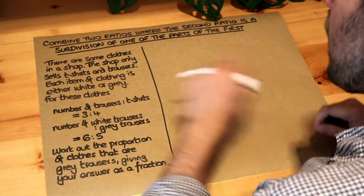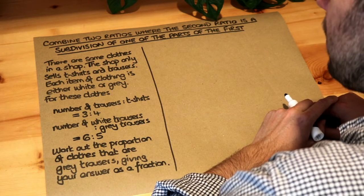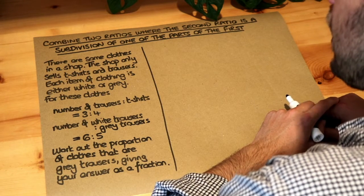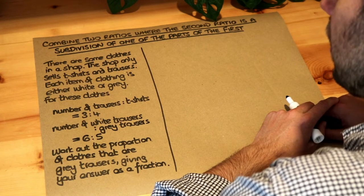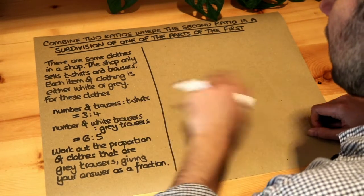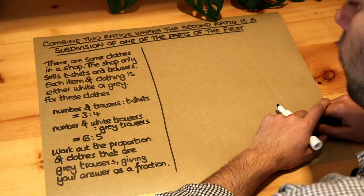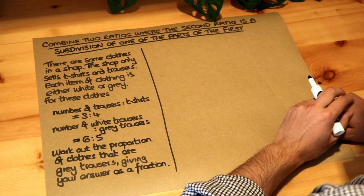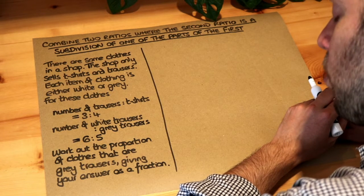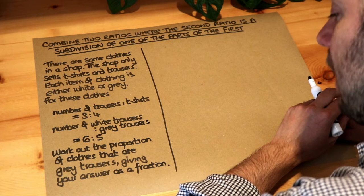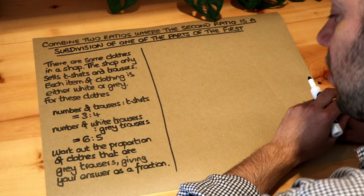Let's read the question. There are some clothes in a shop. The shop only sells t-shirts and trousers. Each item of clothing is either white or grey. For these clothes, the ratio of the number of trousers to the number of t-shirts is 3 to 4, and the ratio of the number of white trousers to the number of grey trousers is 6 to 5. Work out the proportion of clothes that are grey trousers, giving your answer as a fraction.